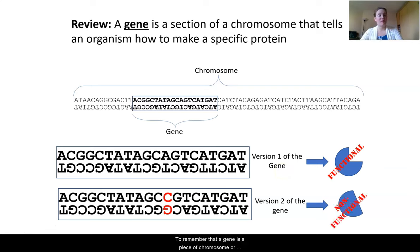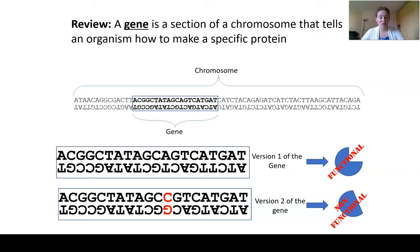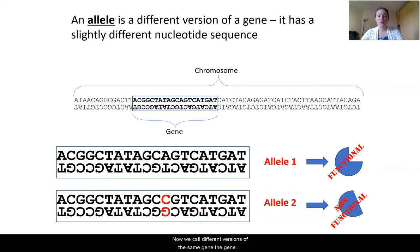Remember that a gene is a small part of a chromosome that tells your cell how to make a protein. The specific A's, C's, G's, and T's — like you learned about last time with the fruit loops — determine which amino acids make up the protein. Amino acids are the monomer of the polymer protein, which determines the protein shape. We call different versions of the same gene an allele, and these different versions can have slightly different nucleotide sequences.